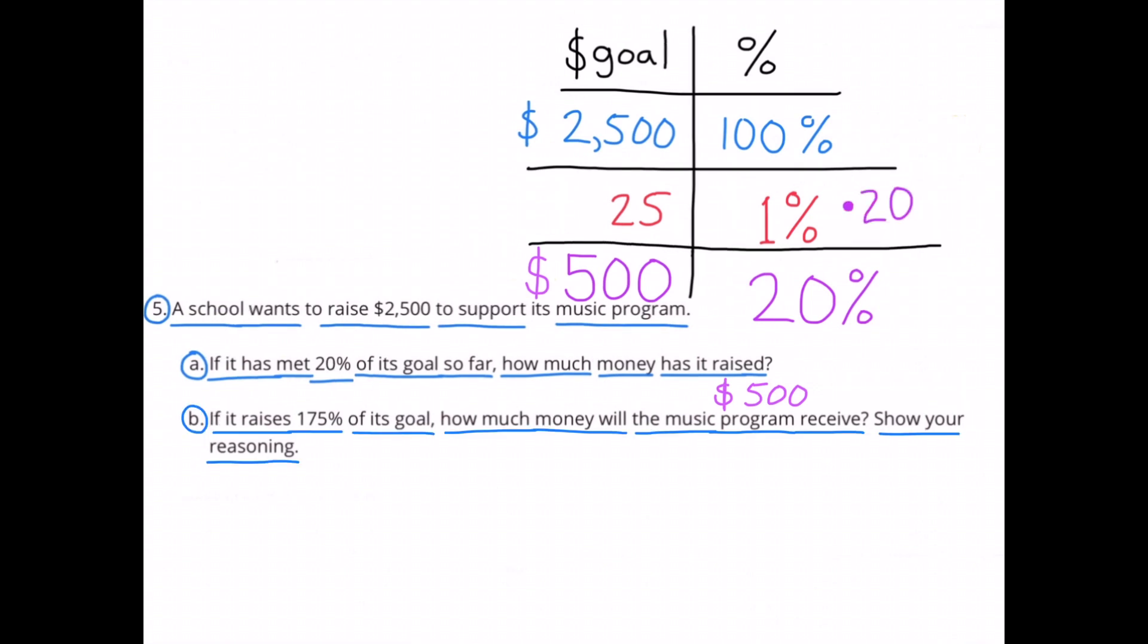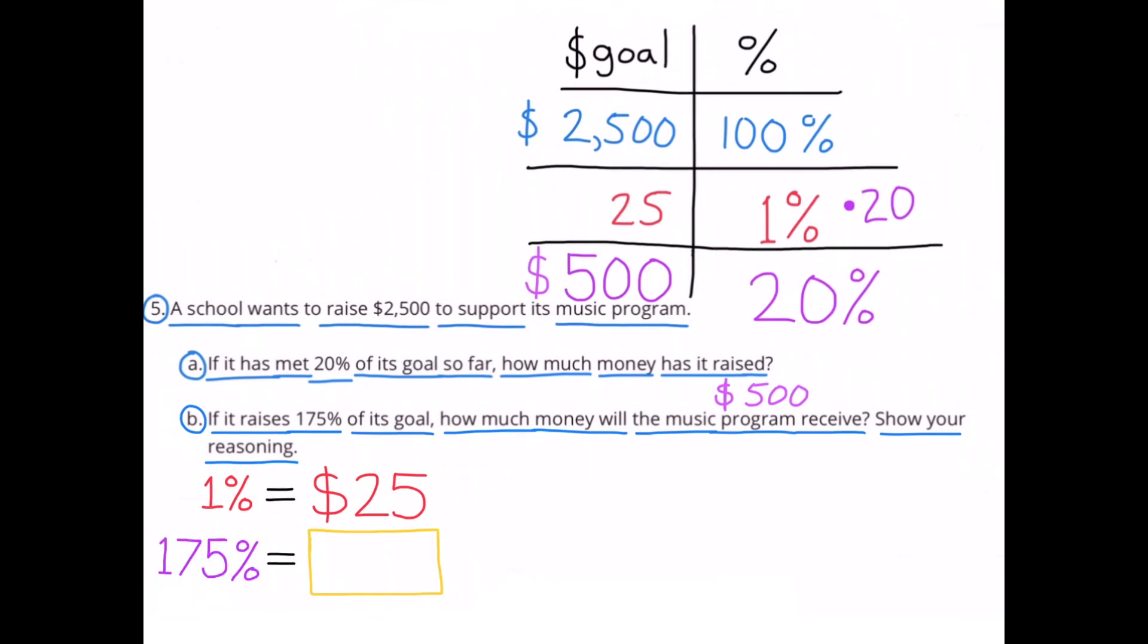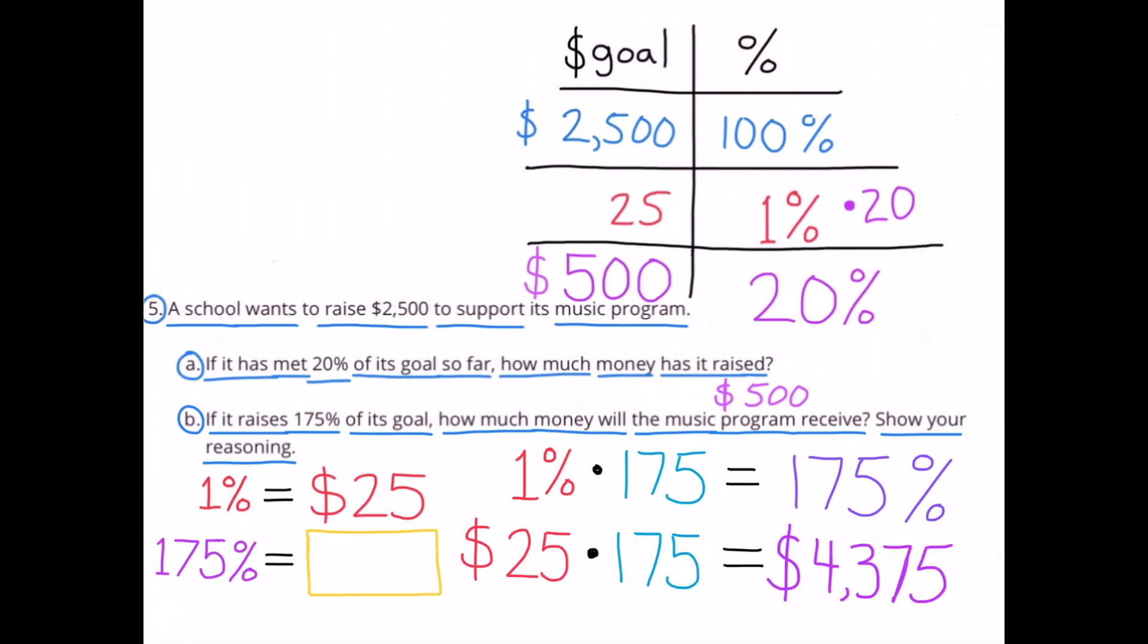B. If it raises 175% of its goal, how much money will the music program receive? Show your reasoning. Let's use the information that we discovered while using the table. 1% equals $25. And we can multiply this 1% by a number to get 175%. And we'll multiply 25 times that same number to get the unknown amount. 1% times 175 equals 175%. 25 times 175 equals 4,375. So if the school raises 175% of its goal, the music program would receive $4,375.